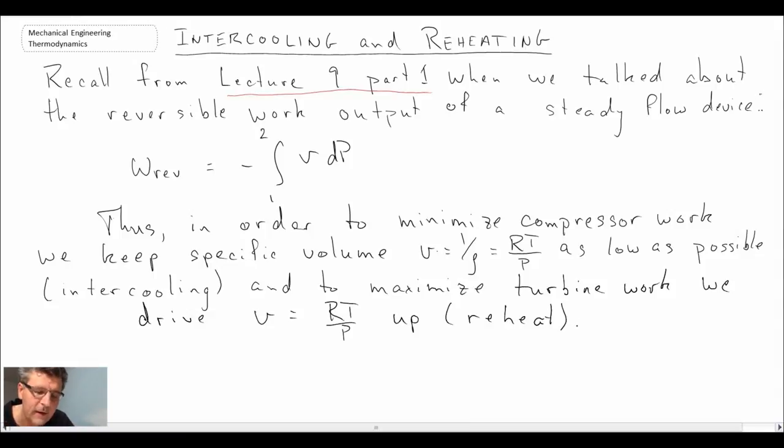What we said is that what we want to do is either minimize the amount of work in a compression stage or maximize work output in a turbine. What we can do is adjust the specific volume. If we're in a compressor, that would be a case where we want to minimize the amount of work that we're doing.